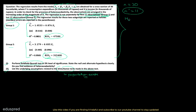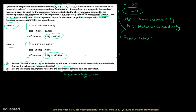We are given the RSS values from both groups. The null hypothesis is homoscedasticity and the alternative is heteroscedasticity. Since RSS2 is greater than RSS1, we place RSS2 in the numerator. The F calculated equals RSS2 divided by RSS1, which is 315,400 divided by 47,500, giving us F calculated = 6.64.